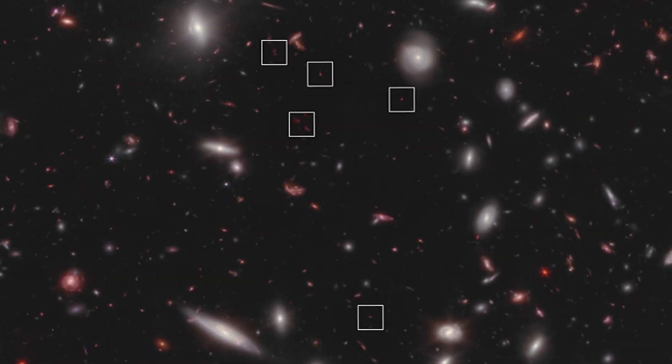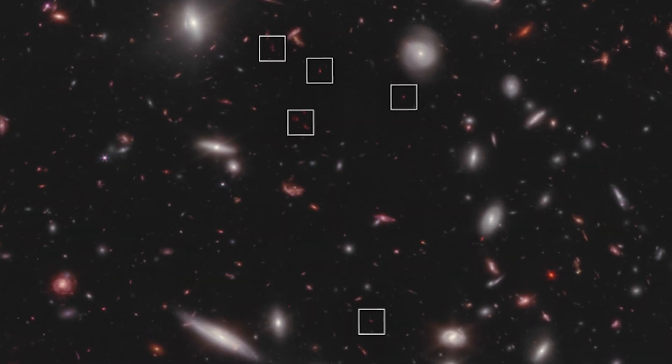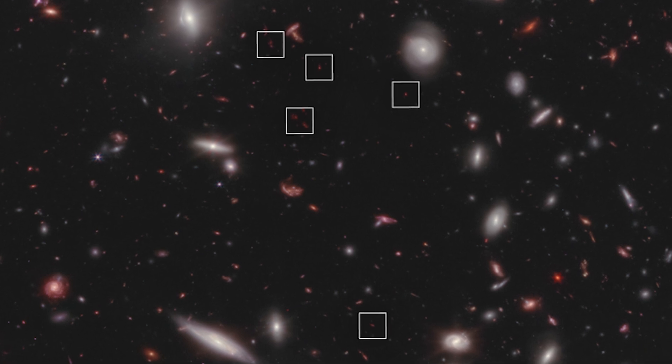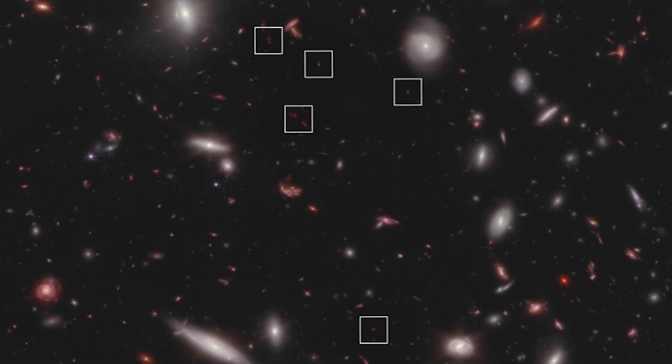According to theoretical physicist Michio Kaku, the discovery of ancient galaxies by the James Webb Space Telescope has called into question everything we knew about the beginning of the universe. Previously, these galaxies were thought to be less developed than the Milky Way, but the new findings suggest that we may be missing crucial information.